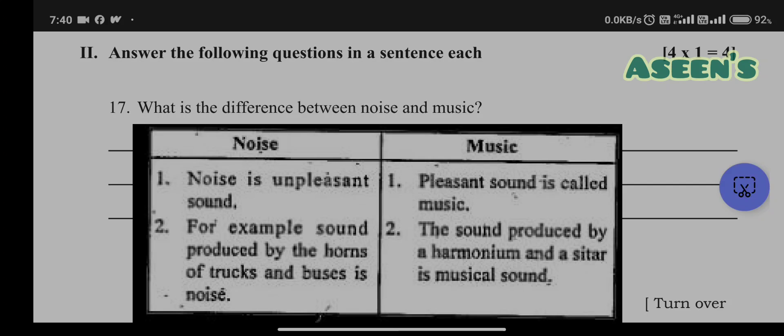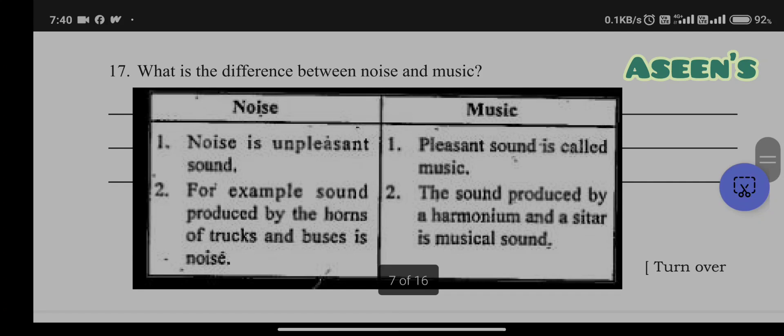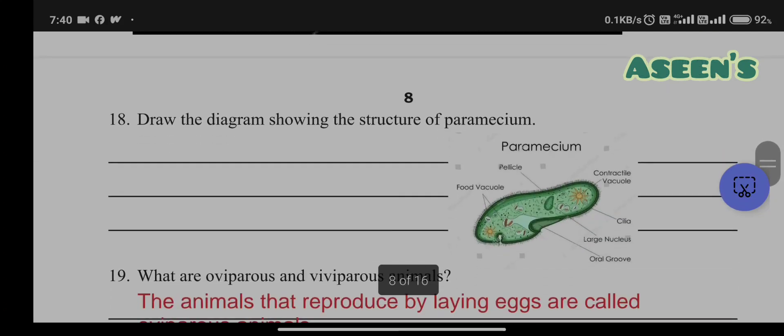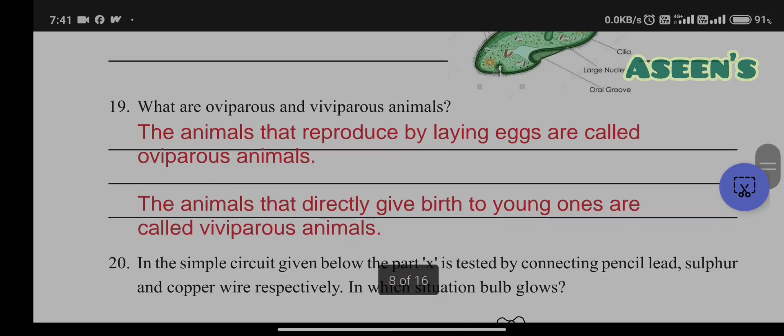Next, this is a diagram showing the structure of paramecium which you can see on the screen. Next, what are oviparous and viviparous animals? Animals that reproduce by laying eggs, for example birds, are called oviparous animals, whereas animals that directly give birth to young ones are called viviparous animals, for example human beings or any other mammals.